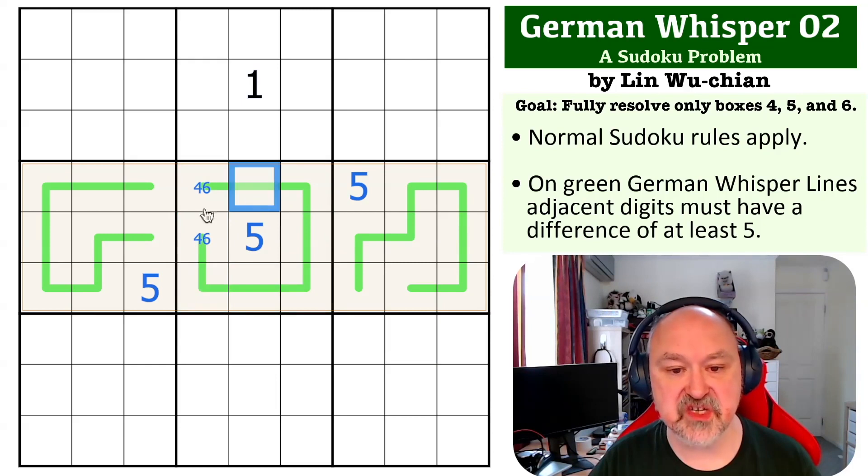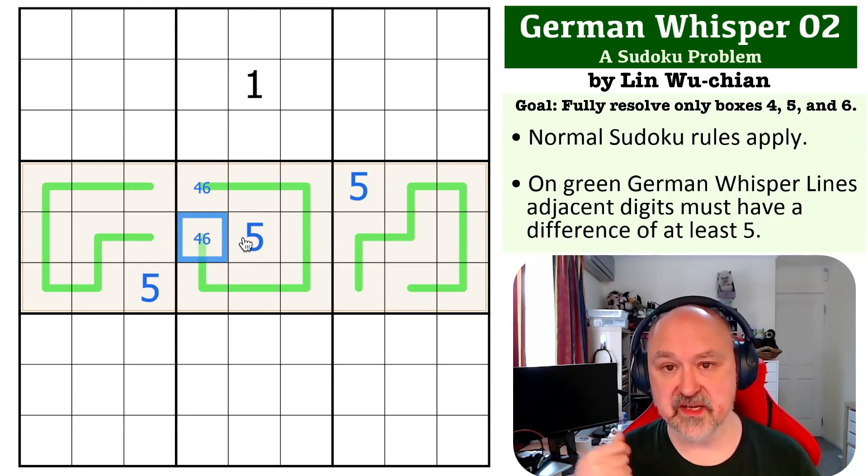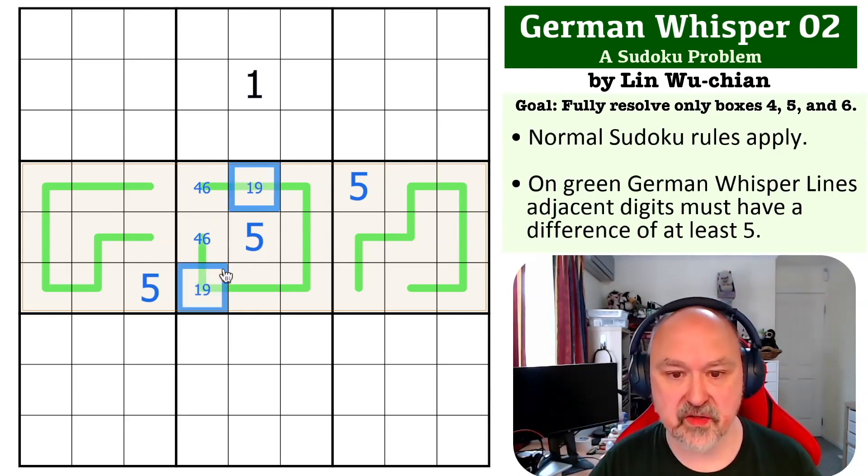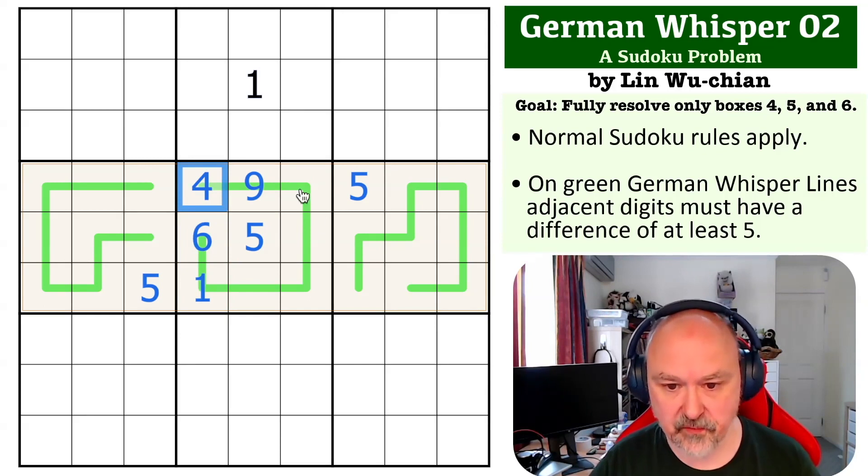That means the digits that are next to the 4 and the 6 have to be the 1 and the 9, because the 4 is going to have to go next to the 9, and the 6 is going to have to go next to the 1. So these become the 1 and the 9, but we know the order. This is going to be the 9, this is going to be the 1, therefore this is going to be the 6, and this is going to be the 4.